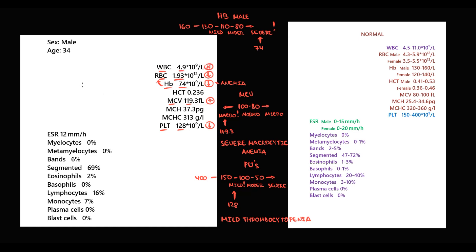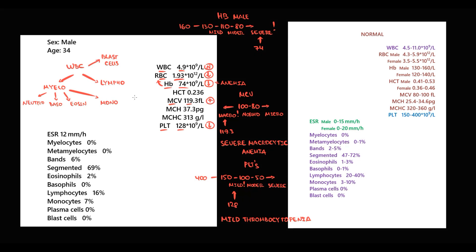The next value is white blood cells. White blood cell count is 4.9, which is normal. White blood cells is a collective term that includes a few types of cells, so we have to check if some subtype is elevated. There are three major groups: blast cells, lymphocytes, and myelocytes. We look at blast cells first because in a normal state there are no blast cells in peripheral blood — and here blast cells are zero, so it's perfectly normal.